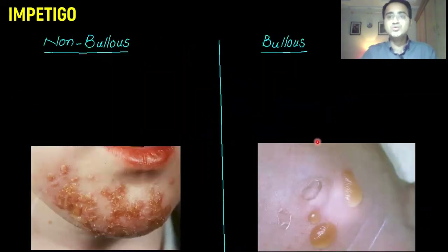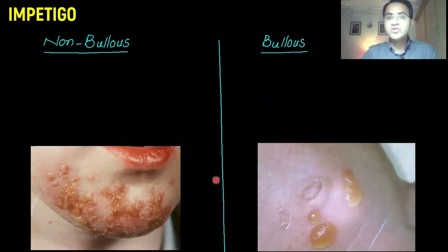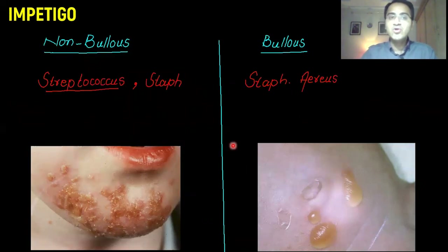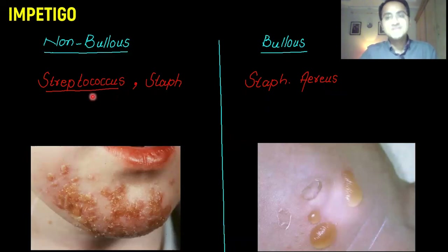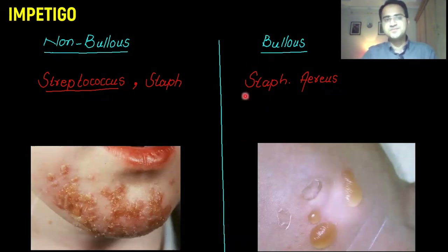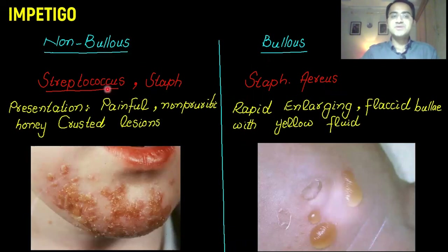Impetigo has two types: non-bullous and bullous. In non-bullous impetigo, we have honey-crusted lesions. Non-bullous impetigo is caused by both Streptococcus and Staphylococcus aureus, but mainly by Streptococcus. Bullous impetigo, on the other hand, is caused by Staphylococcus aureus.